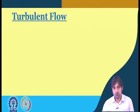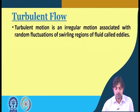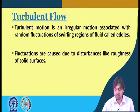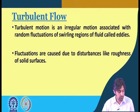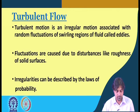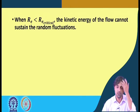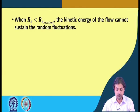We now move to the phenomenon of turbulent flow. Turbulent motion is an irregular motion associated with random fluctuations or swirling regions of fluid called eddies. These fluctuations are caused by disturbances like roughness of a solid surface. When the Reynolds number is less than the critical value — for pipe flow, around 2300 — the kinetic energy cannot sustain random fluctuations, and the flow remains laminar.